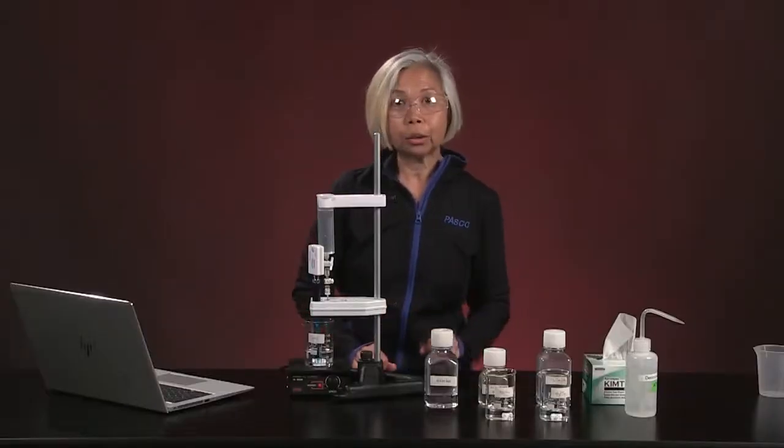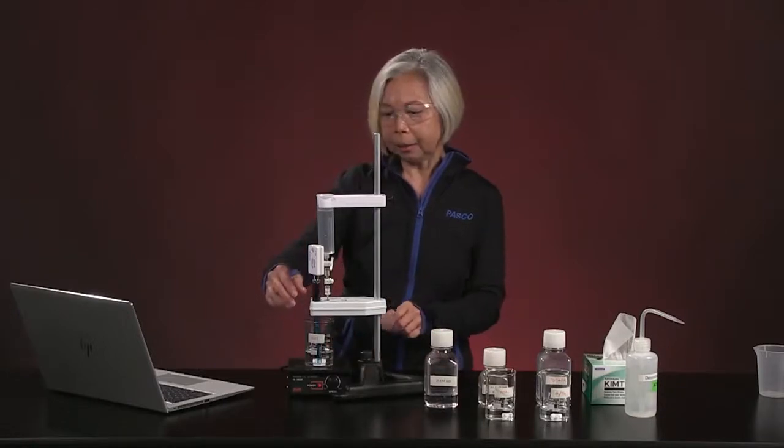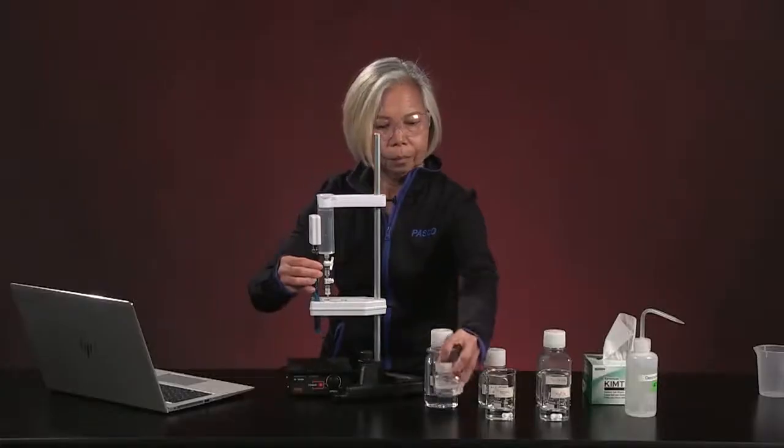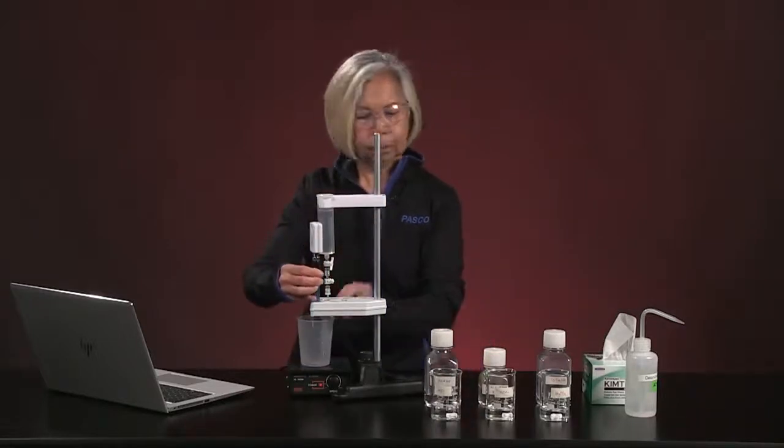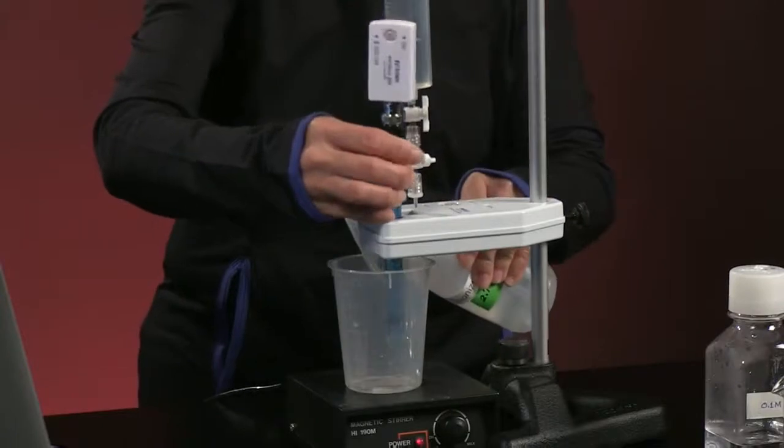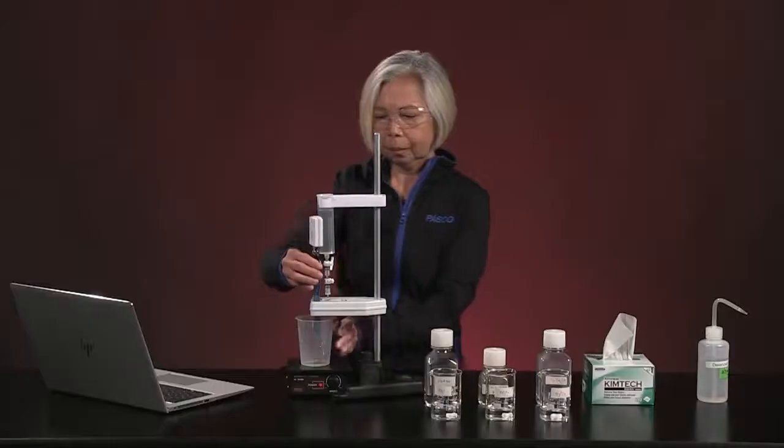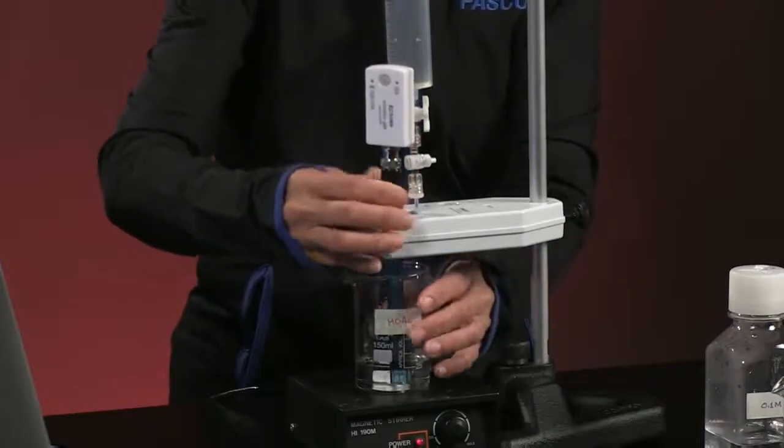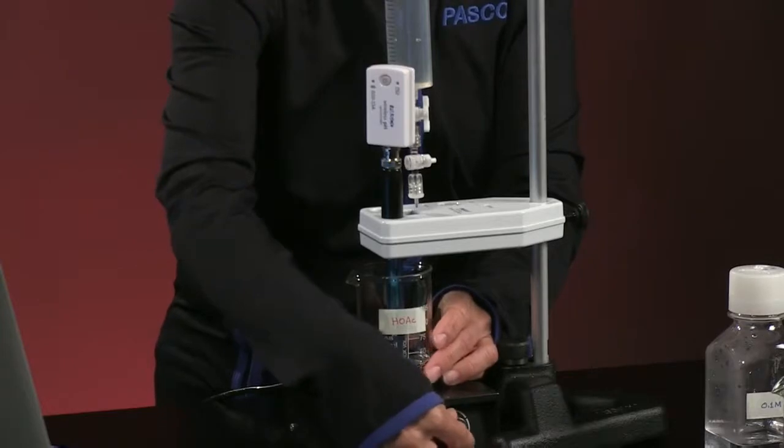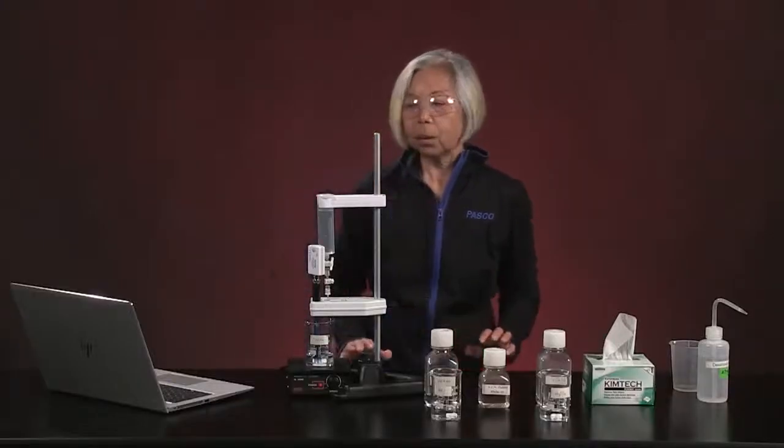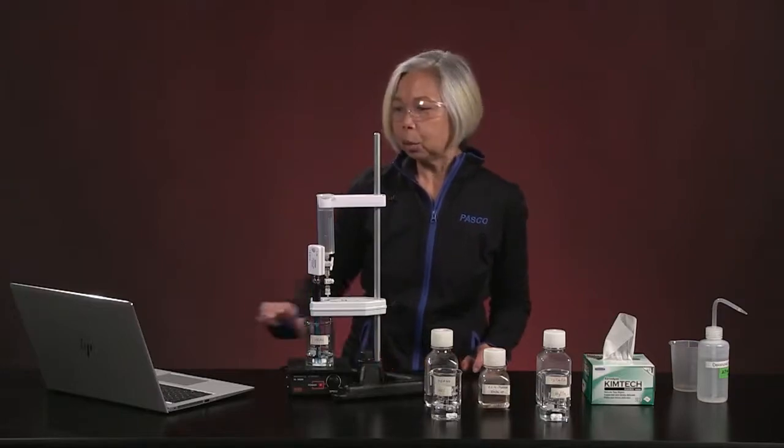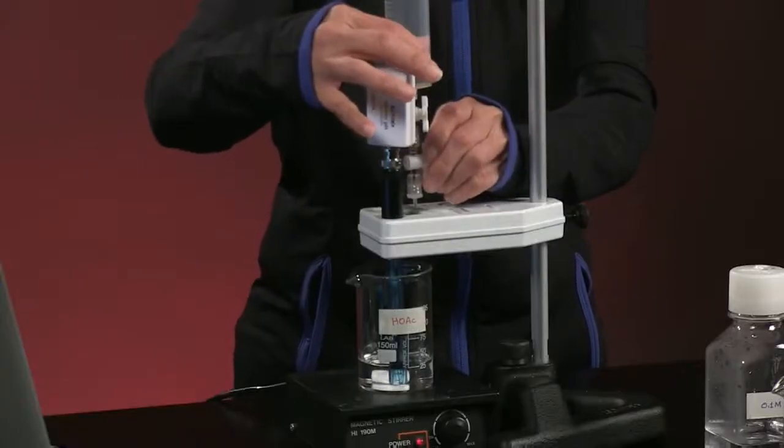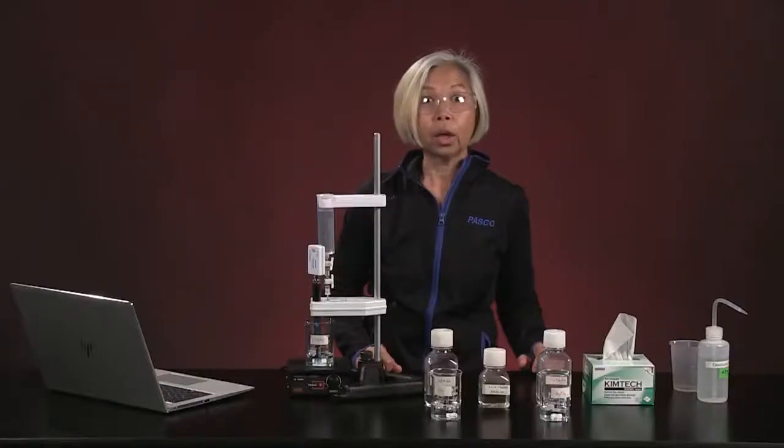We will now shift so that we can do the titration profile of the weak acid, which is acetic acid. We are now ready to do our acetic acid titration. I'm going to press the start button once again. We're going to get a blank screen, and I'm going to turn on our little on-off stopcock. And we are off and running.